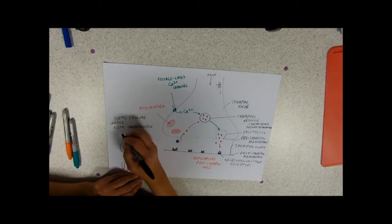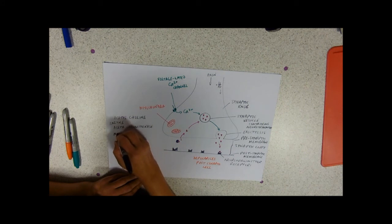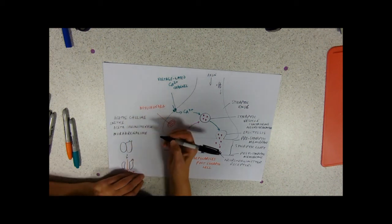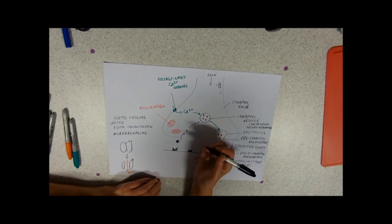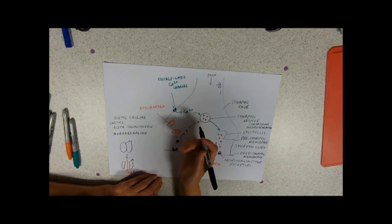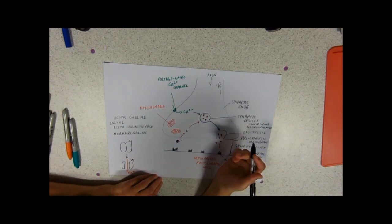And our other one is noradrenaline. Now, this acts just like adrenaline, so if you think fight or flight response, it's a very stimulatory kind of neurotransmitter. So, it's found in the sympathetic nervous system.